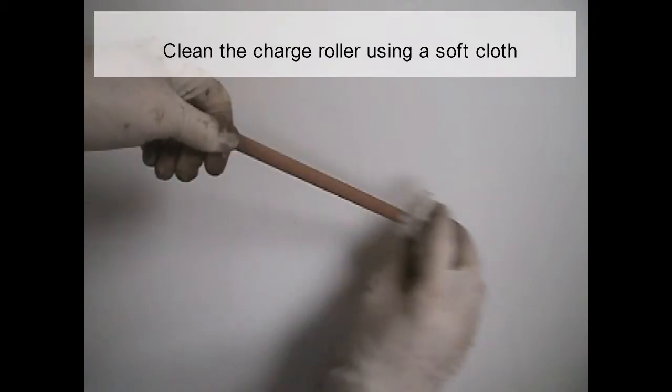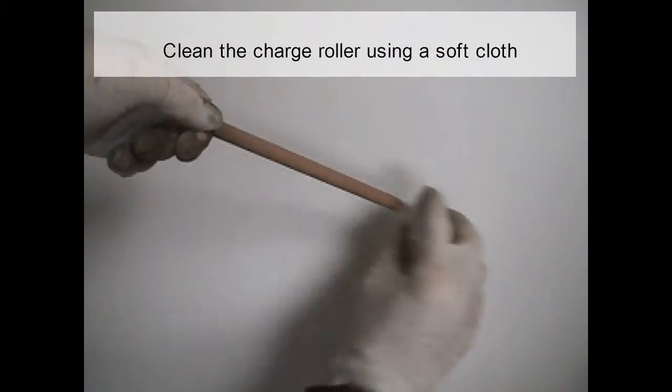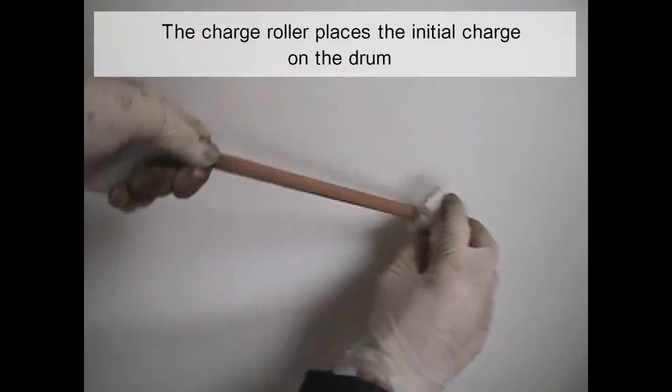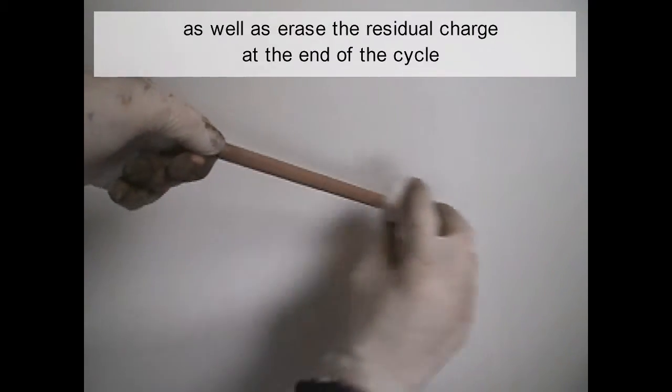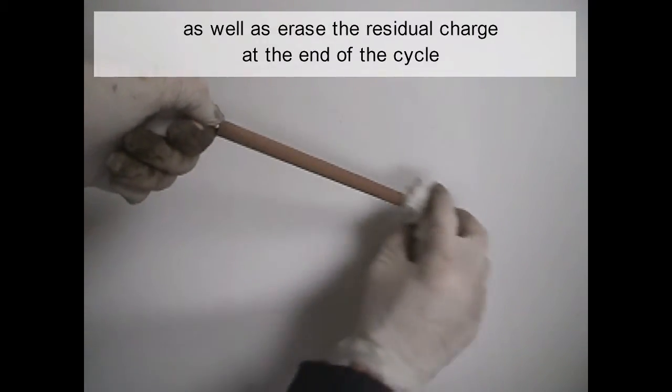Clean the charge roller using a soft cloth. The charge roller places the initial charge on the drum as well as erases the residual charge at the end of the cycle.